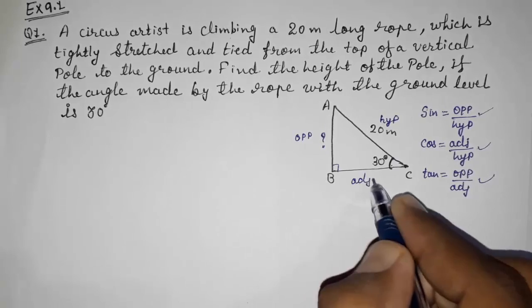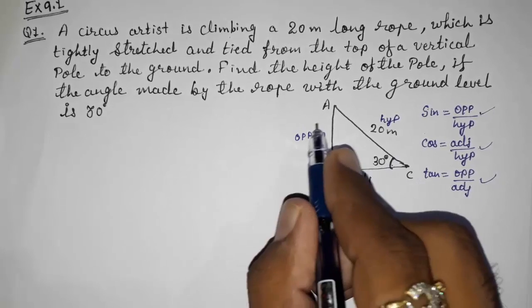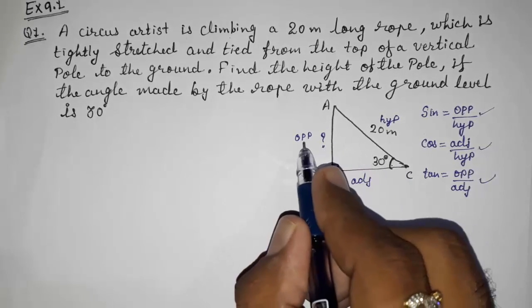Some are taking this as base and this as perpendicular. Opposite is always perpendicular, and adjacent is always base.